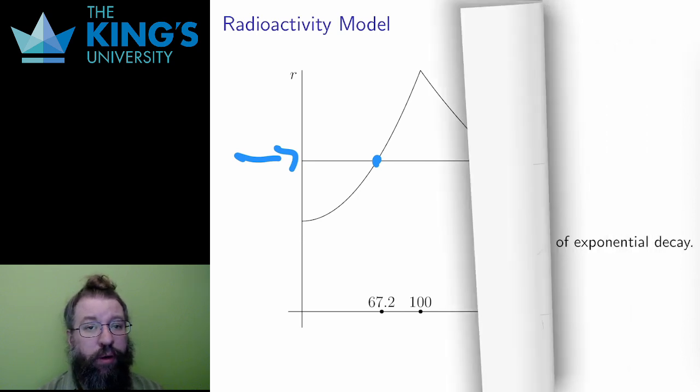Here is another model, this time of population. The domain is positive t, again with no reason to limit time. Starting value is p equals 100, found by just inserting t equals 0 into the model. Unless otherwise said, I'm always going to assume that models start at 0.